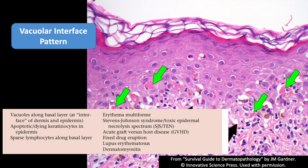Here are some examples of diseases: erythema multiforme and the Stevens-Johnson/toxic epidermal necrolysis spectrum.